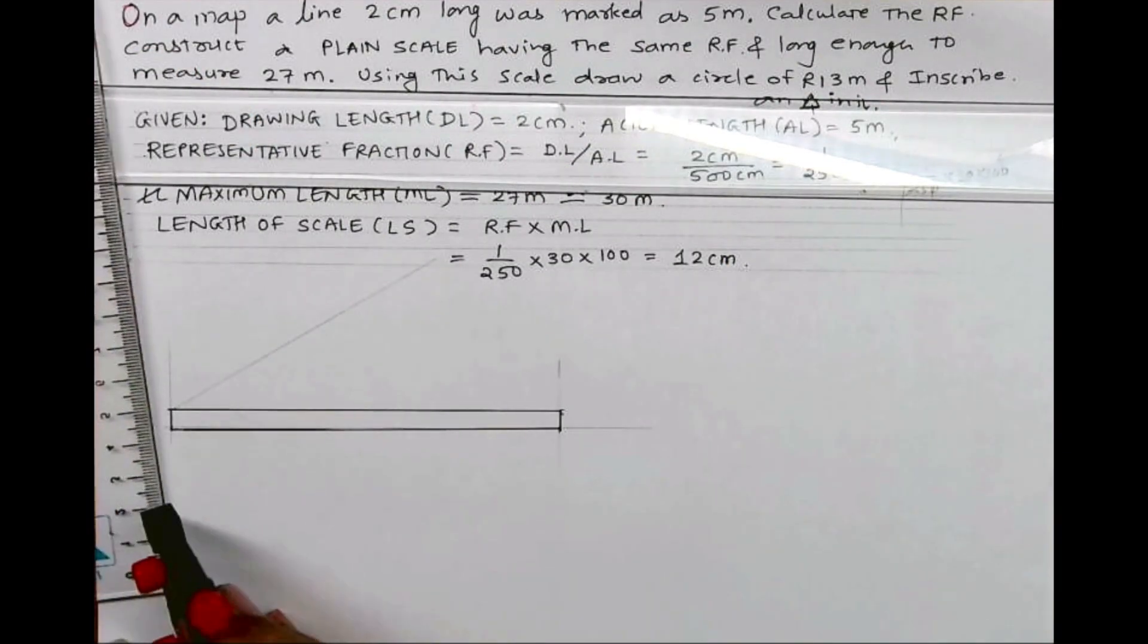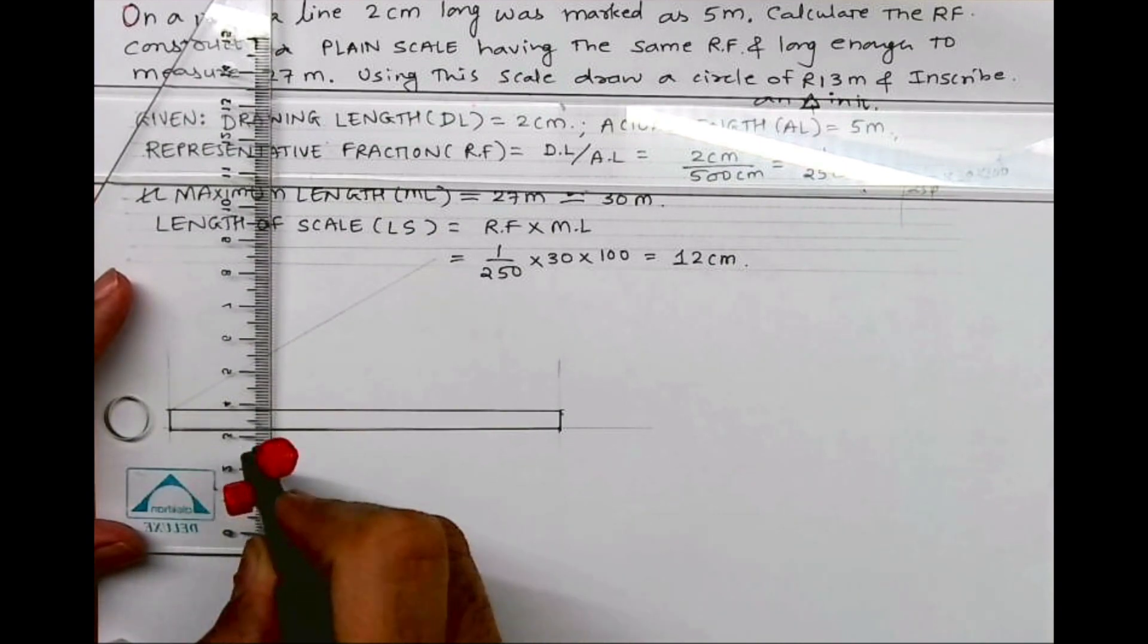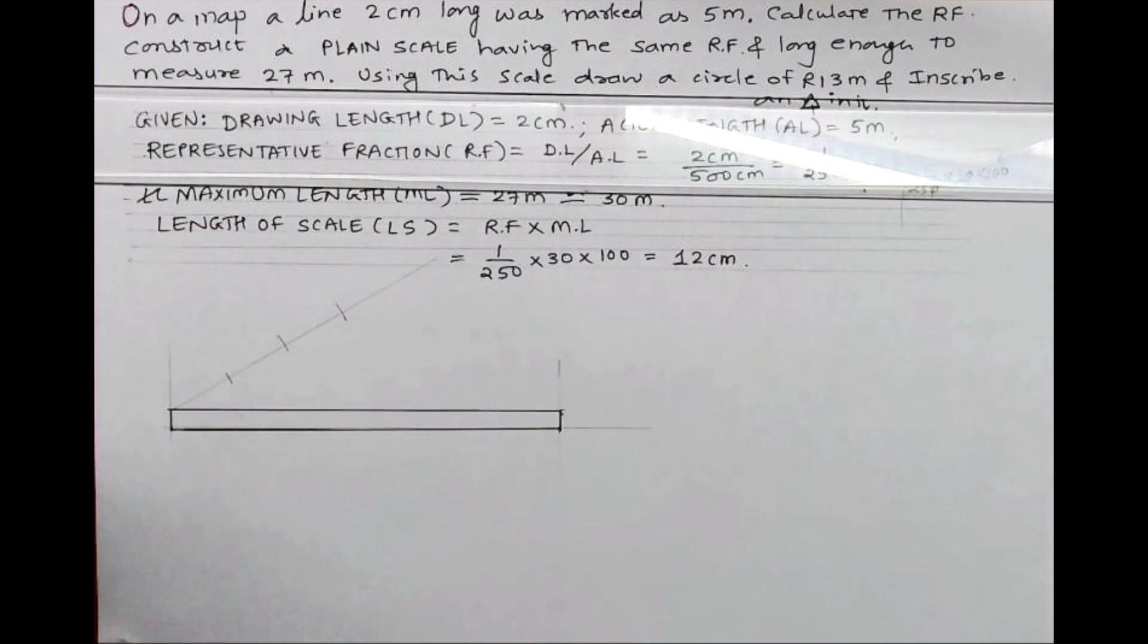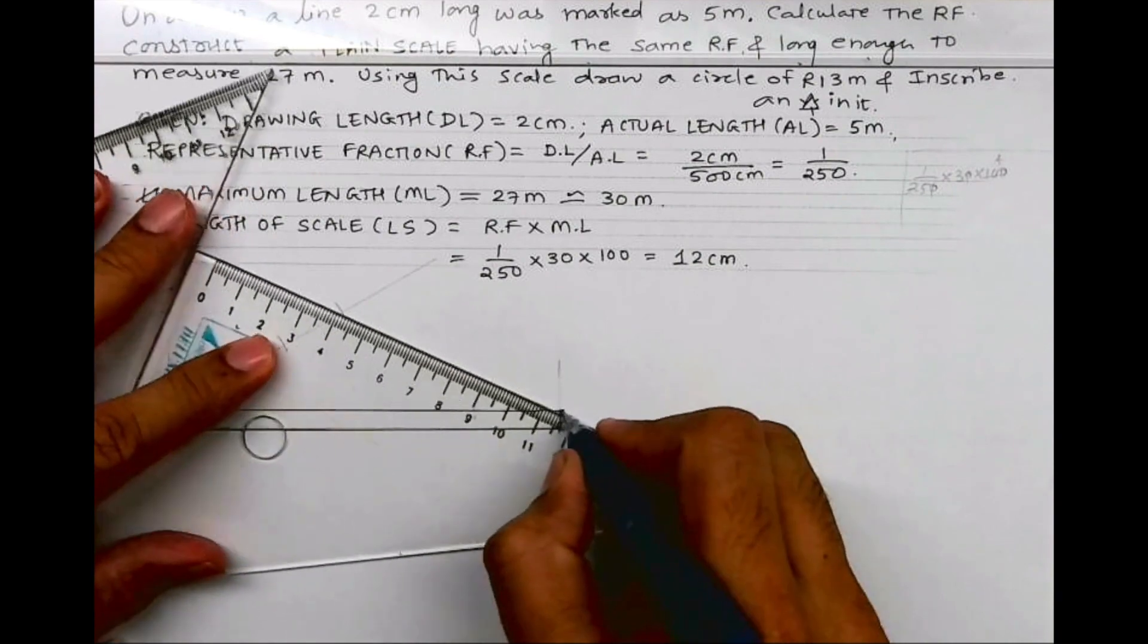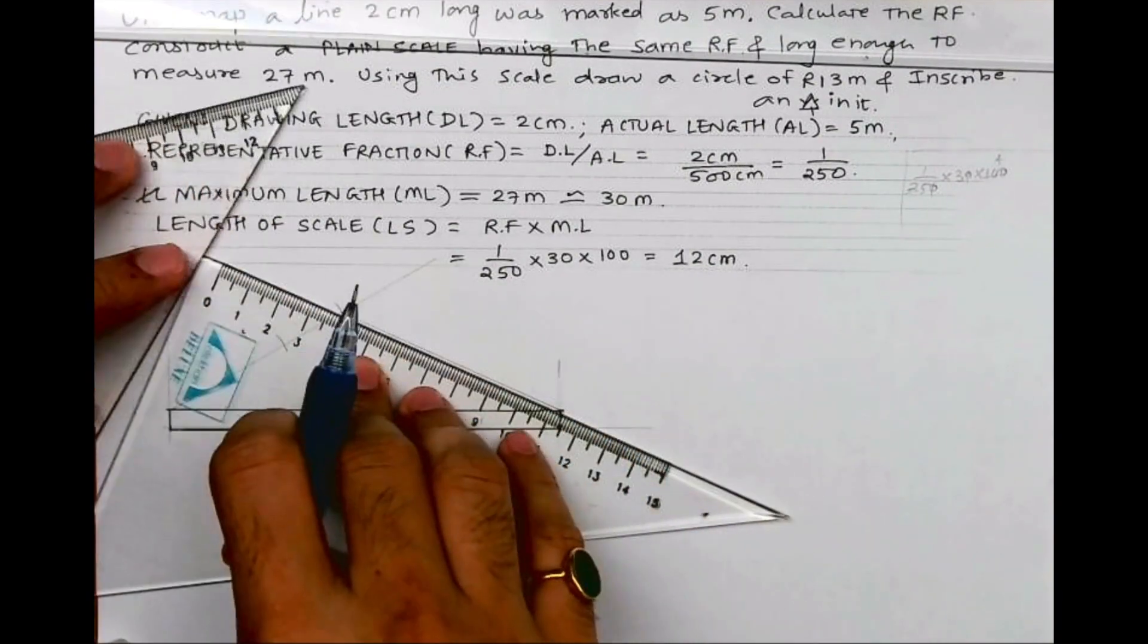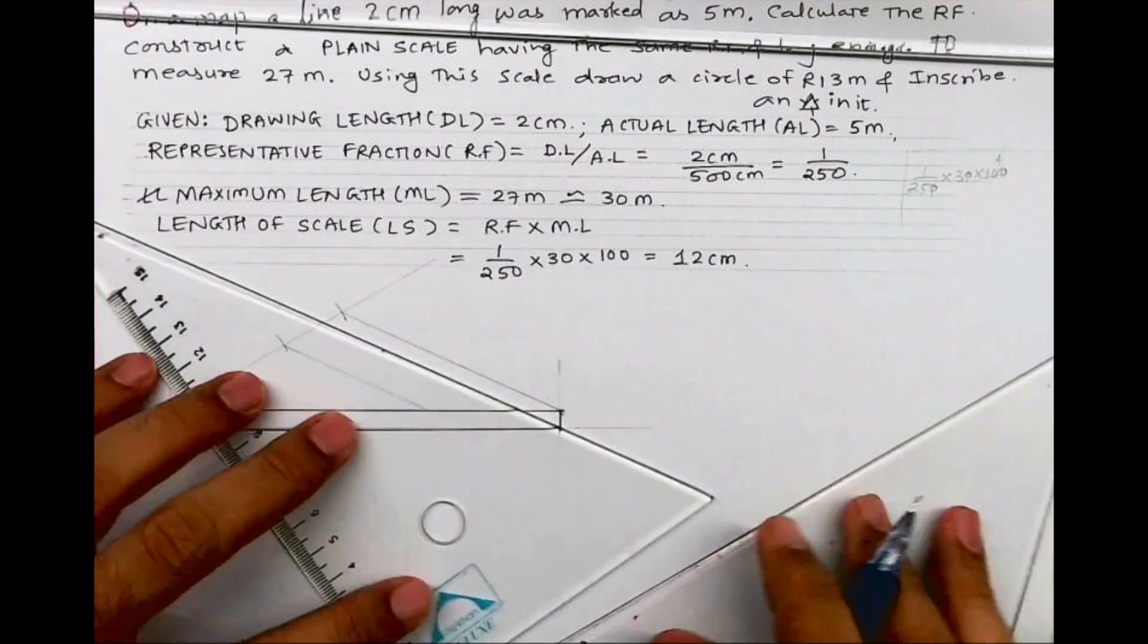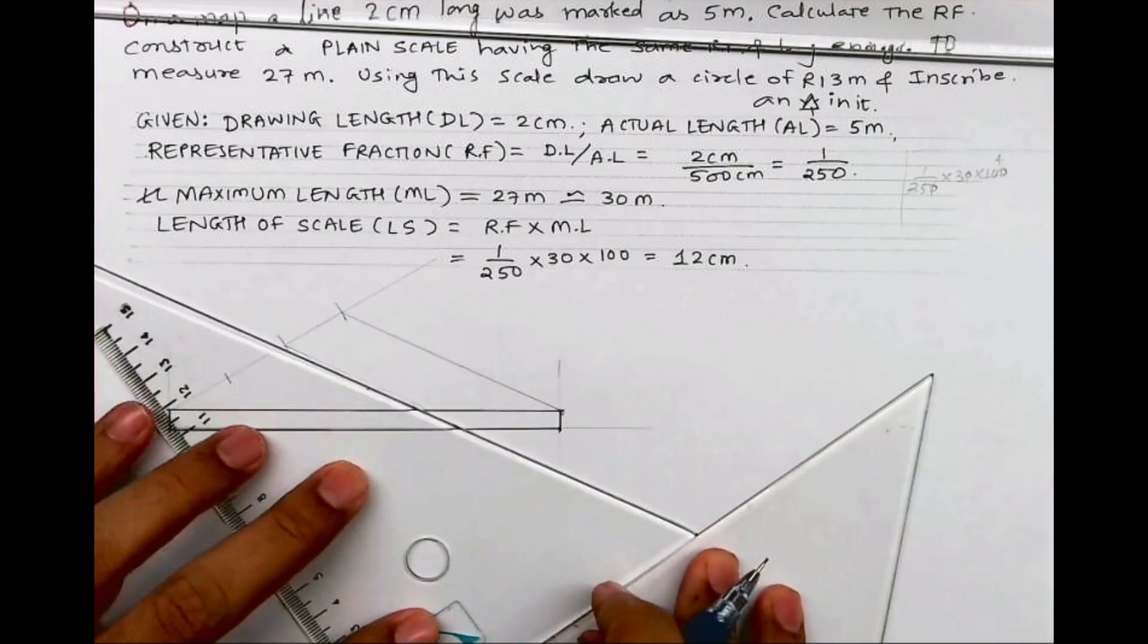So I will draw an angle. I will cut maybe 1 or 2 cm and cut 3 times. So I am dividing this line into 3 parts. That is one of the reason why I have taken 30. Maximum length was 27; I can't divide this into 27 parts. So that's why I have rounded off to 30. And now I am dividing this 30 into 3 parts, so I will get 10, 10, 10 m each.